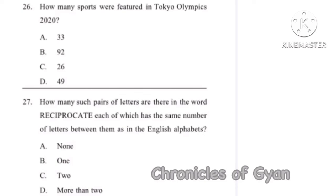Question 27: How many such pairs of letters are there in the word RECIPROCATE, each of which has the same number of letters between them as in the English alphabets?